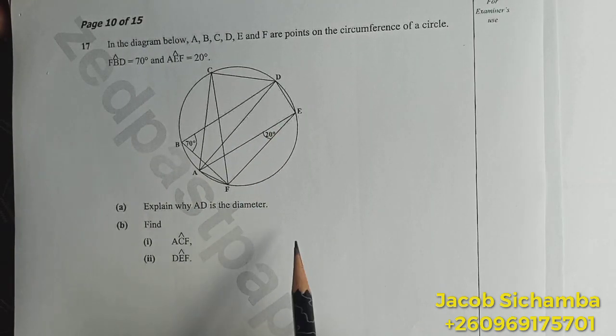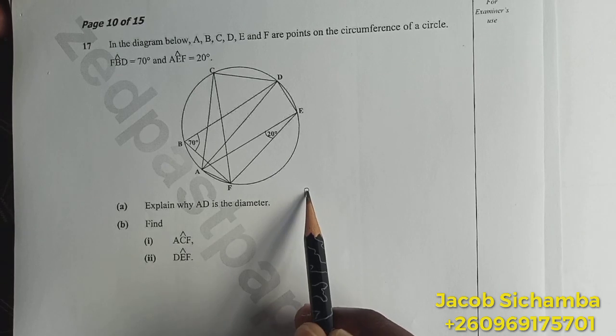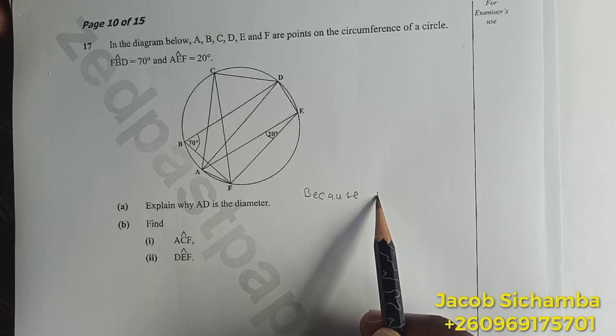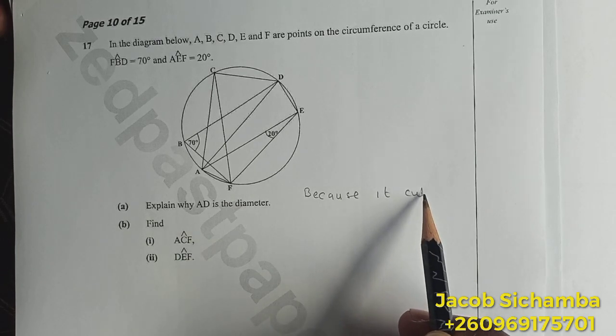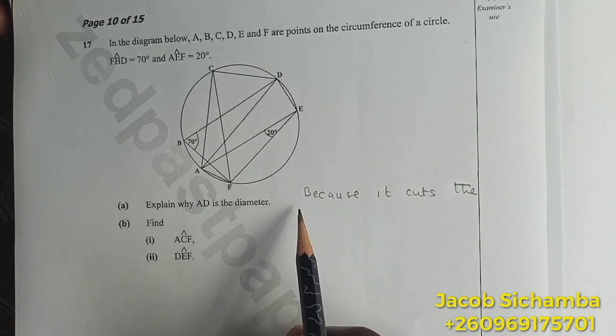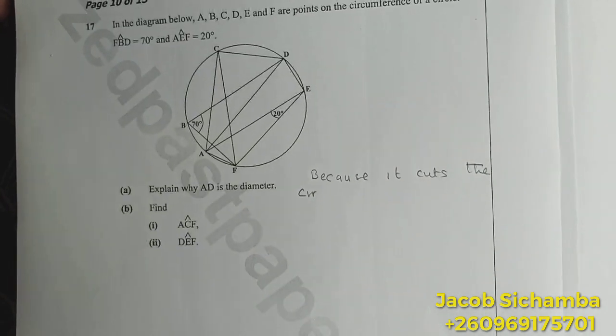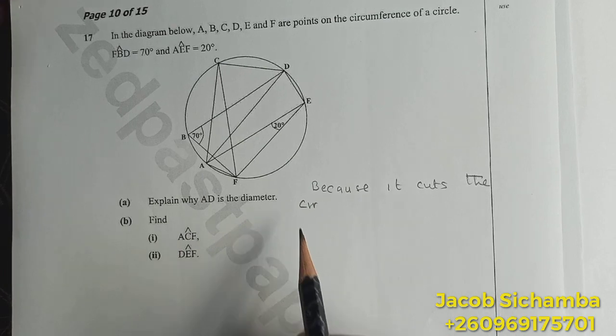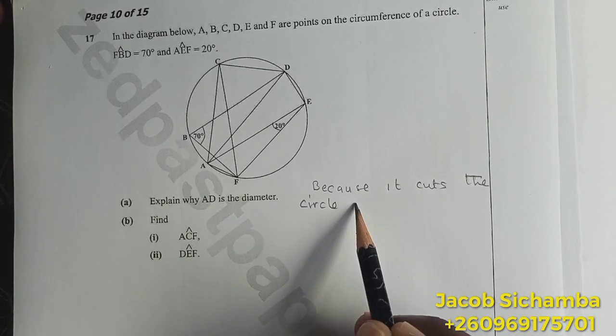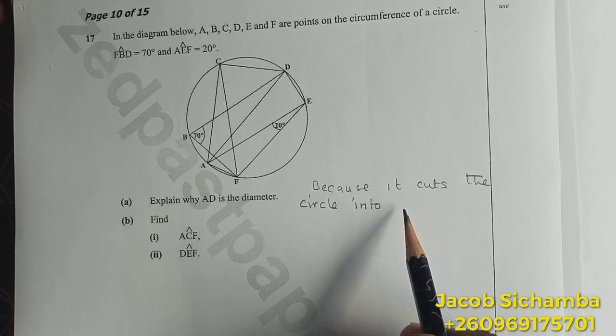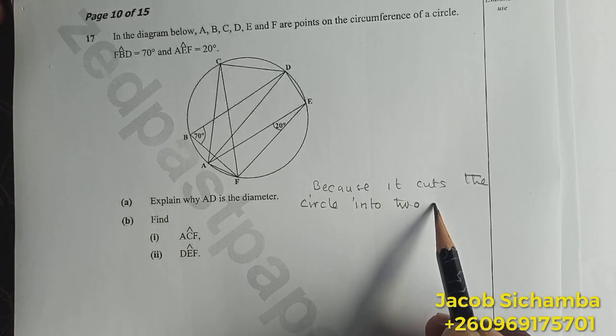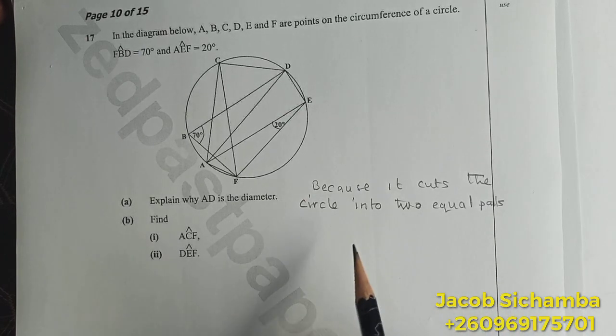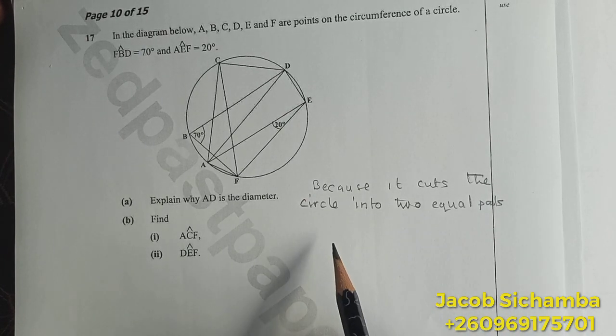AD is the diameter because it cuts the circle into two equal parts.